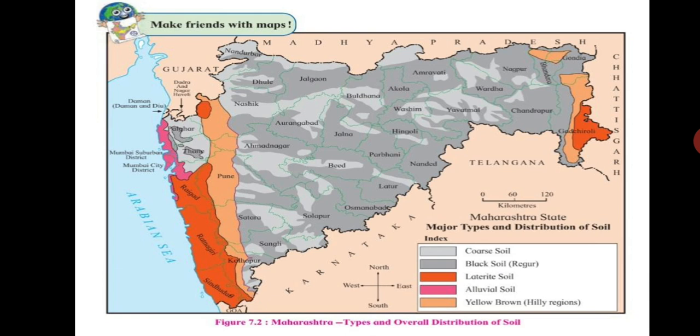Let us have a look at figure 7.2 on page 41 of your textbook. You have studied the major soil types of Maharashtra. On the basis of the soil's color, texture, formation process, and thickness of layers, we can divide the state's soils into five major types.